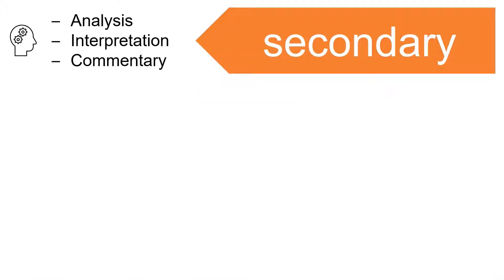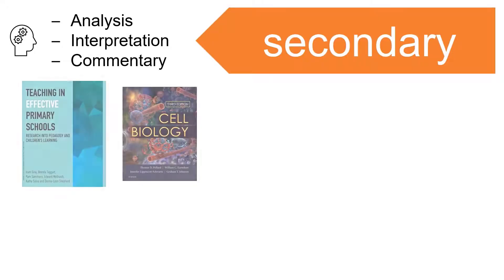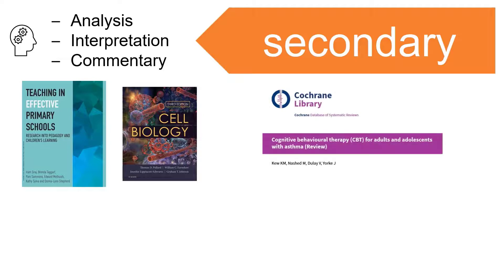Secondary sources of information analyze, interpret, or comment on primary sources. Secondary sources include encyclopedias and journal articles that review the work of other authors, like systematic reviews or literature reviews.